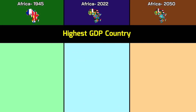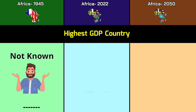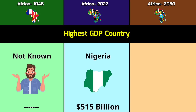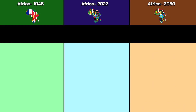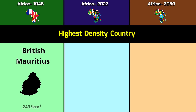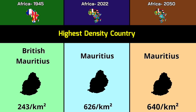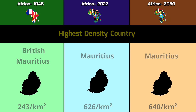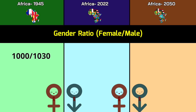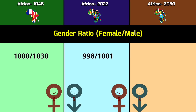Most populated country: Colonial Nigeria with 31 million in 1945; Nigeria with 215 million in 2022; Nigeria with 401 million in 2050. Highest GDP country: Not known in 1945; Nigeria at 515 billion dollars in 2022; Egypt at 4.3 trillion dollars in 2050. Highest density country: British Mauritius at 243 per km²; Mauritius at 626 per km² in 2022; Mauritius at 640 per km² in 2050.